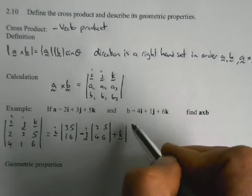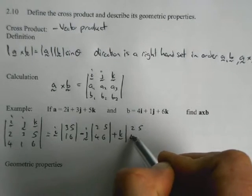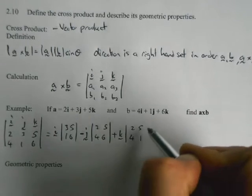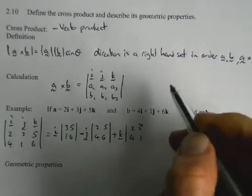and if we cross out the K column, we're left with 2, 5, 4, 1, that should be 2, 3. So 2, 3, 4, 1, and then we've just got to work out the determinants of what's going on here.